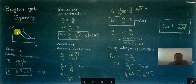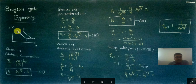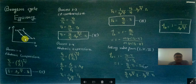Process 1 to 2 indicates adiabatic compression, where air is compressed. In process 2 to 3, it is the combustion process where heat addition takes place. Process 3 to 4 is the expansion process where work is done by the system, and process 4 to 1 is the heat rejection process where heat is rejected at constant pressure.